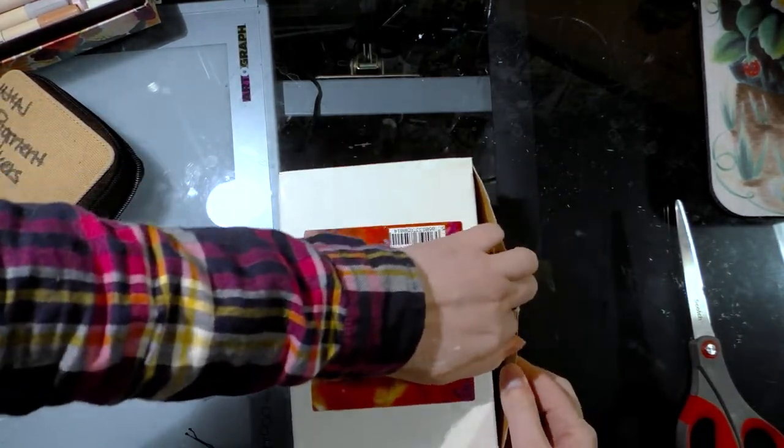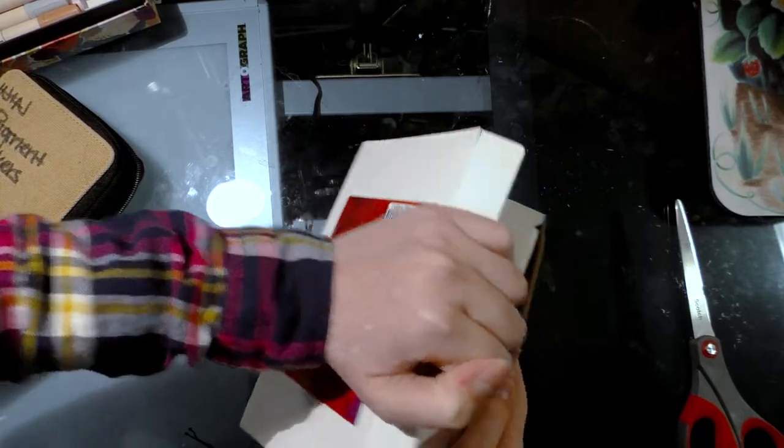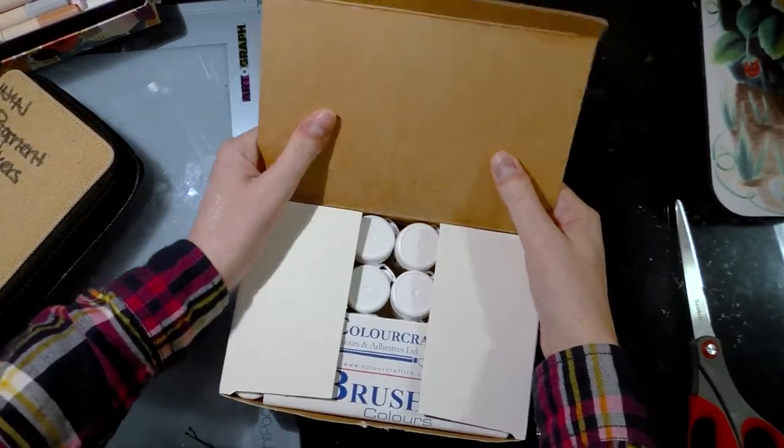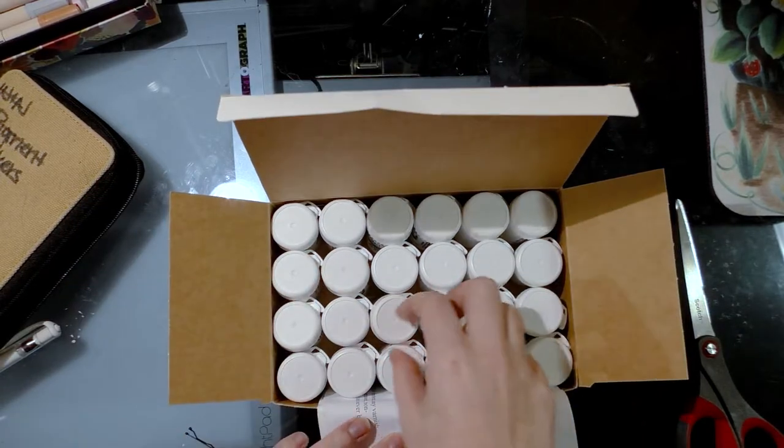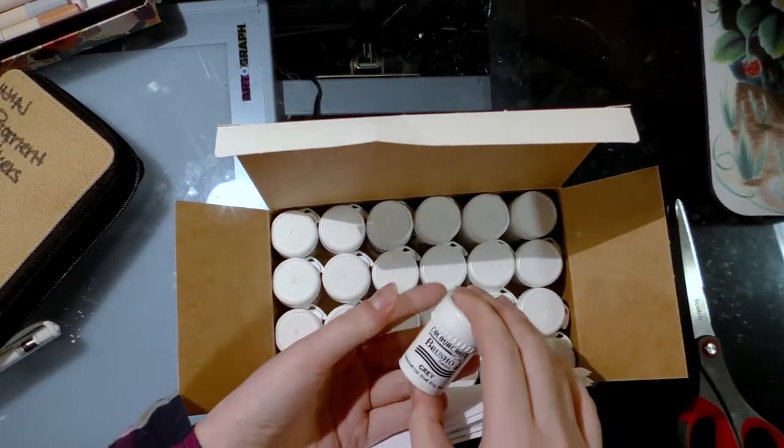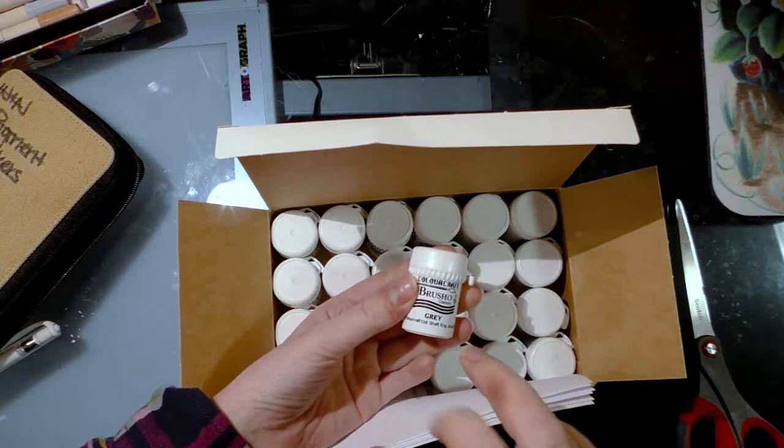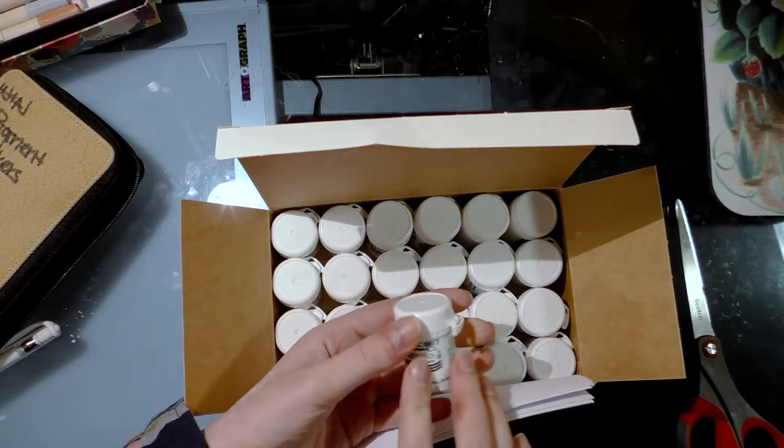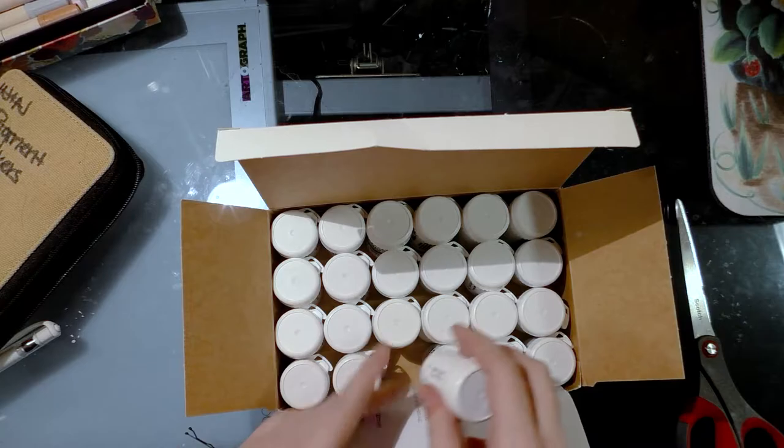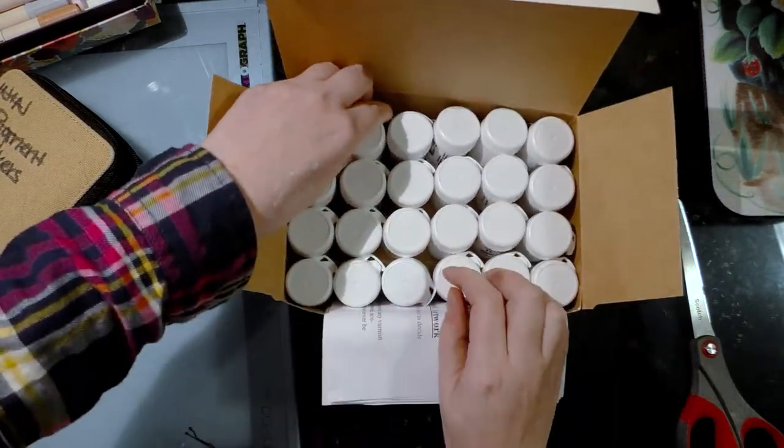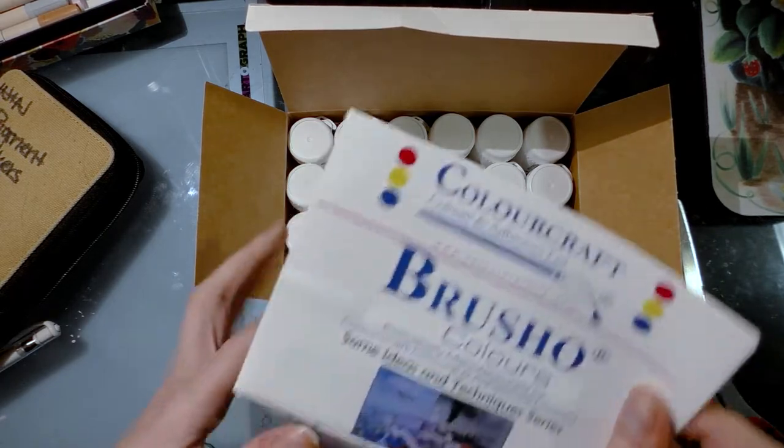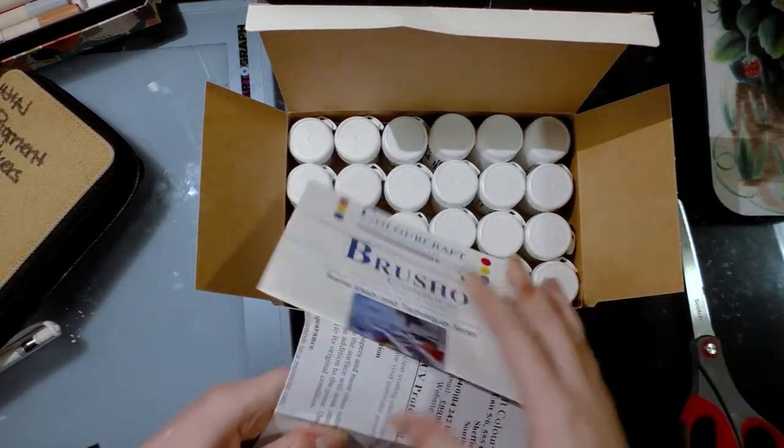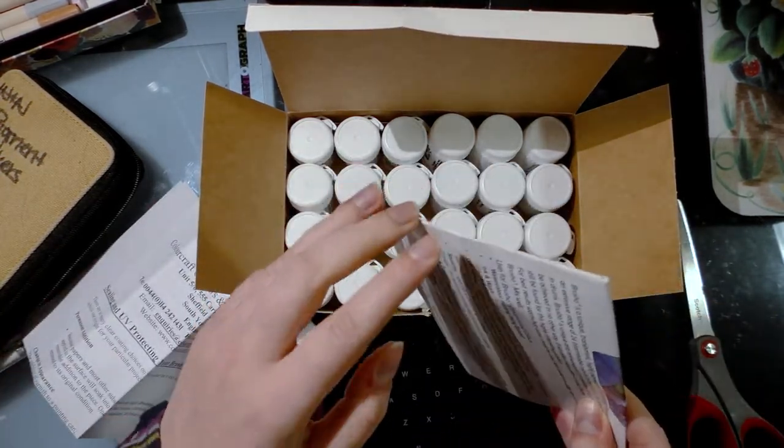I've seen a lot of crafters and card makers talk about Brusho. Brusho is powdered watercolor pigments, and what's interesting is there are multiple shades on top of each tone inside each bottle. It seems like each of these is sealed, and I ordered the 24 pack for myself.